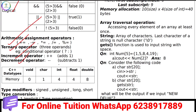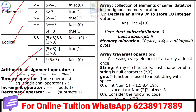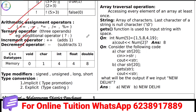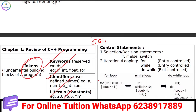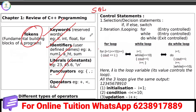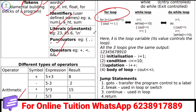We will learn more about Operators and Control Statements. In Control Statements, we will learn the syntax for a for loop, including initialization, condition, updation, and the body of the loop.